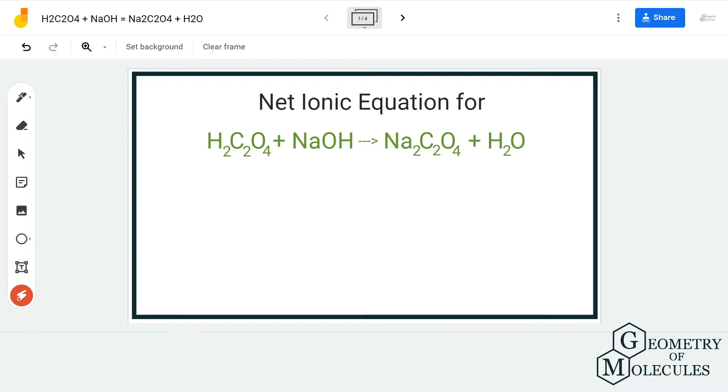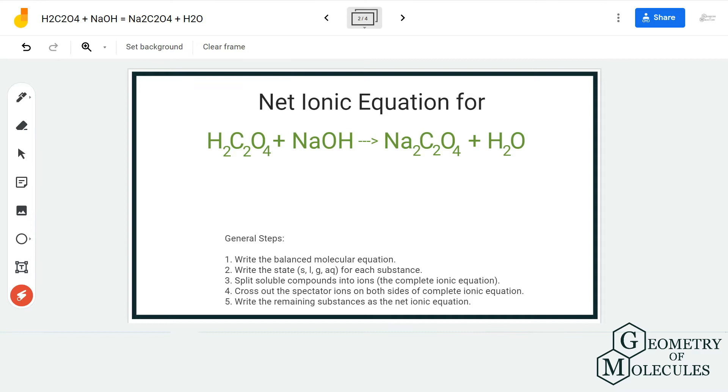To find out the net ionic equation, the first rule that we follow is to balance this equation. I'm going to add a coefficient 2 before NaOH and before H₂O to balance this equation. Now if you check the number of atoms, it will be the same for both the reactant and product side.